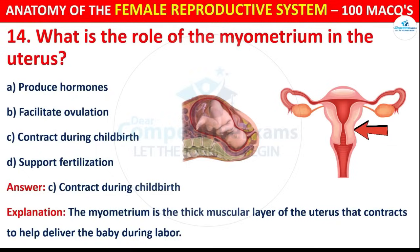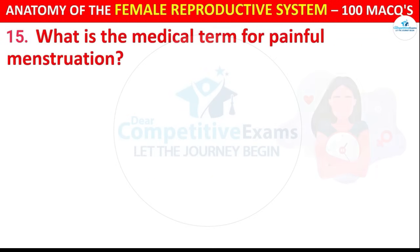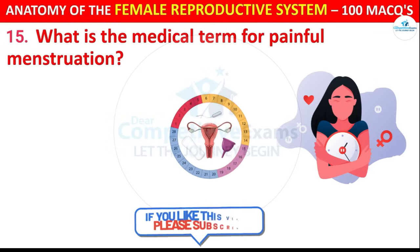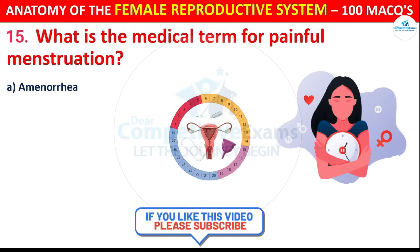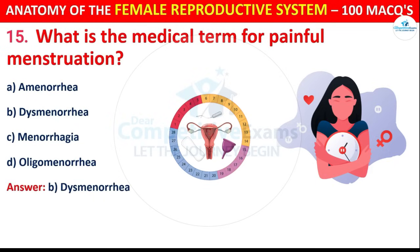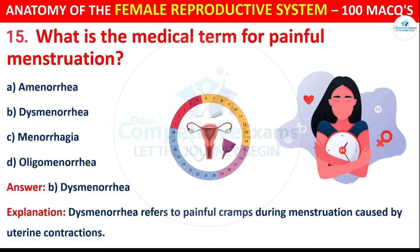Question number 15: What is the medical term for painful menstruation? Options are: Amenorrhea, Dysmenorrhea, Menorrhagia, or Oligomenorrhea. The correct answer is B, i.e. Dysmenorrhea. Dysmenorrhea refers to painful cramps during menstruation caused by uterine contractions.